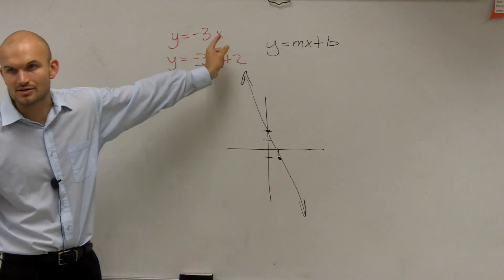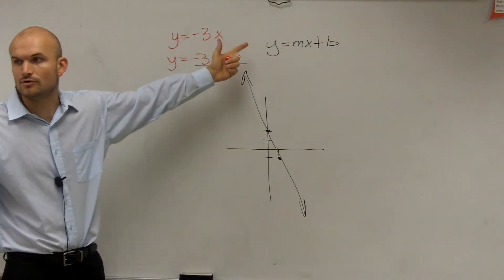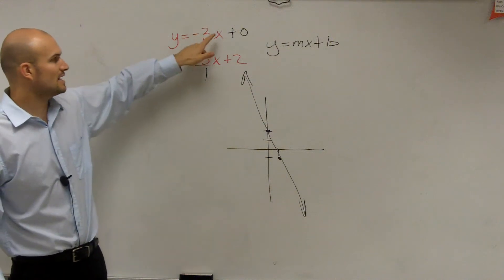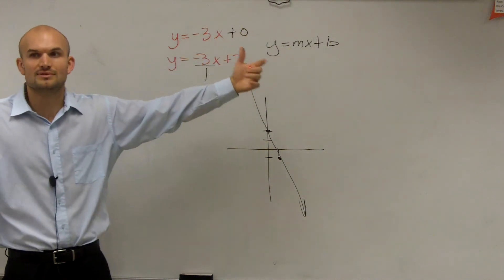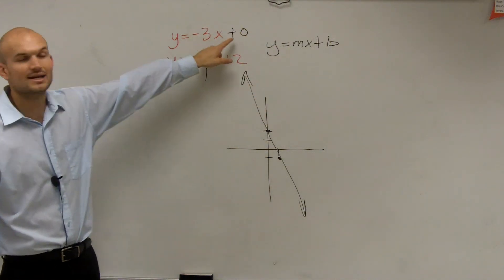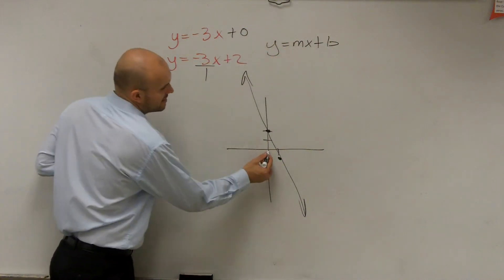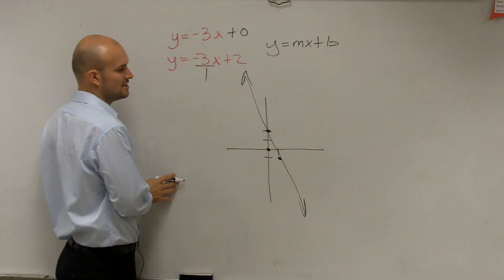However, this one, what is my y-intercept? Well, I don't have a number there. There's no number written. So we know we can write the number 0, because negative 3x plus 0 is just negative 3x, right? But I write in 0 so I know, oh, OK, that's going to be my y-intercept. That means this graph crosses at 0.